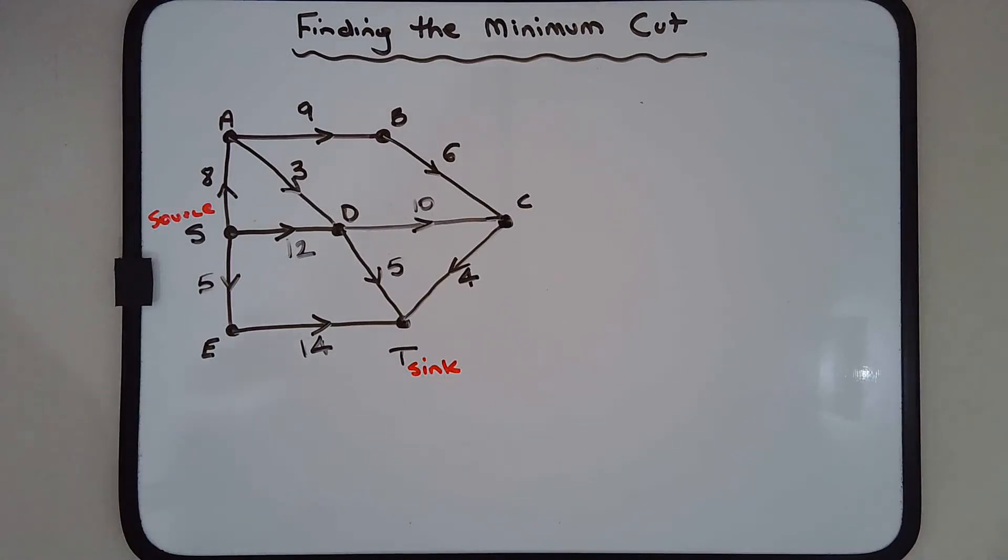In this video I'm going to look at another example of the maximum flow minimum cut theorem. Here's an example that involves seven vertices - here's the source, there's the sink, and we'd like to determine the maximum flow of this network.